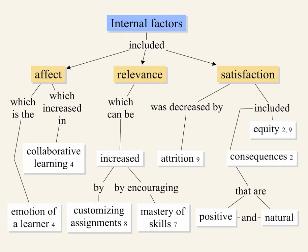The remaining three internal motivational factors are effect, relevance, and satisfaction. Effect was described as influencing the emotion of a learner, and emotion was reported to significantly affect student learning. Technology-based course instructors and developers could increase effect and emotion by applying collaborative learning principles. Relevance was another essential motivational factor; customizing assignments and class projects by incorporating students' own experiences would increase relevance and thus internal motivation.